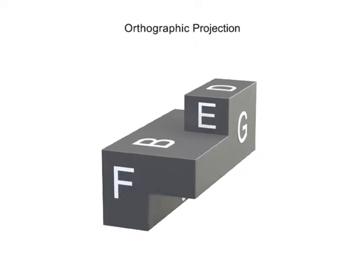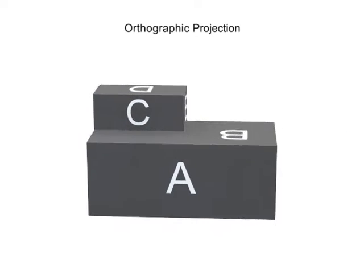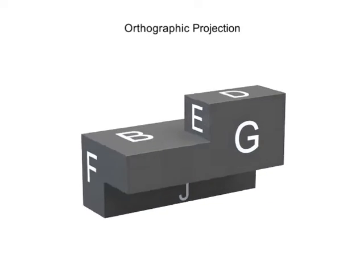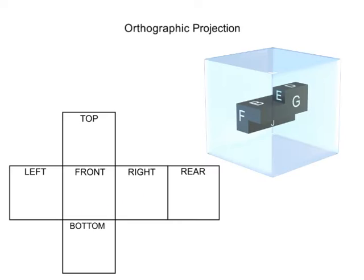Complex parts show much more detail on each view, but can ultimately still be illustrated in the same way. As with a simple part, imagine the complex part in a glass box. Each side projects an image onto the wall of the box. This image becomes one view.